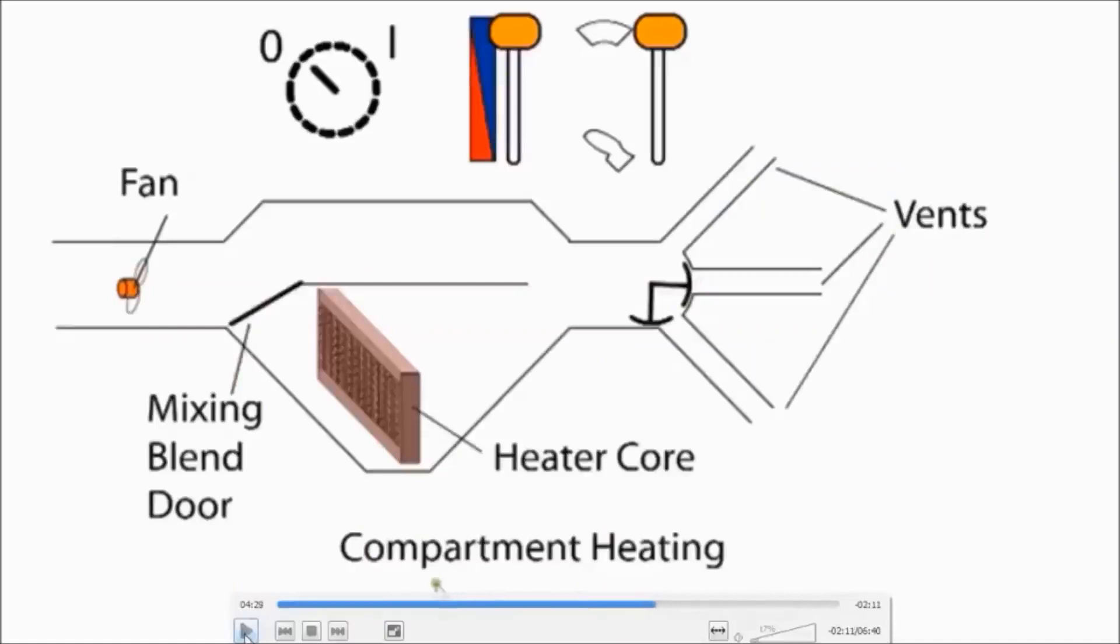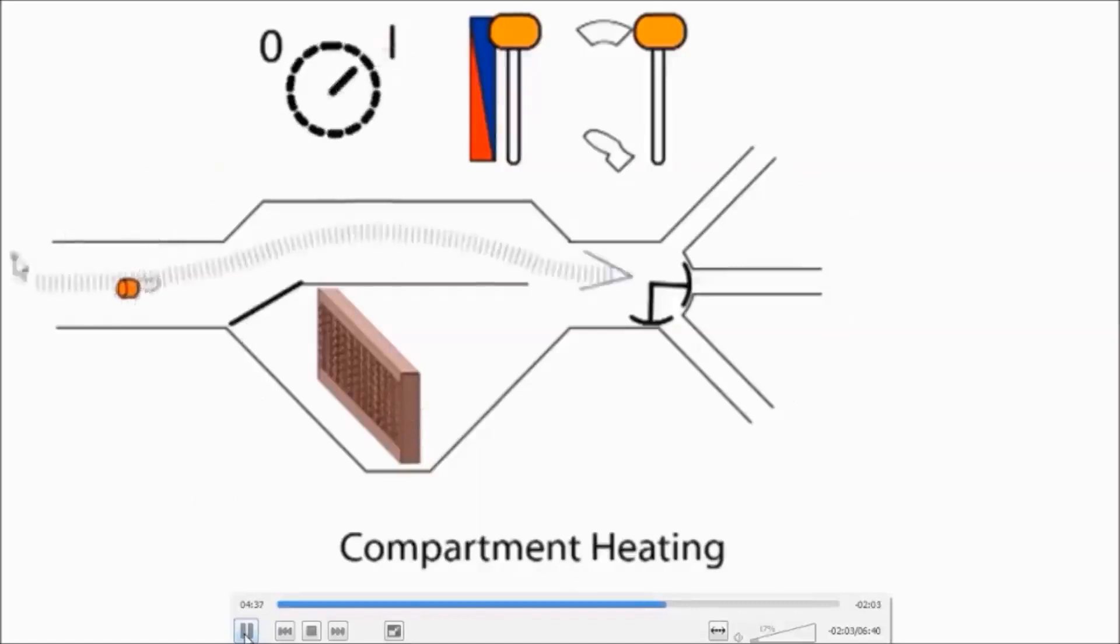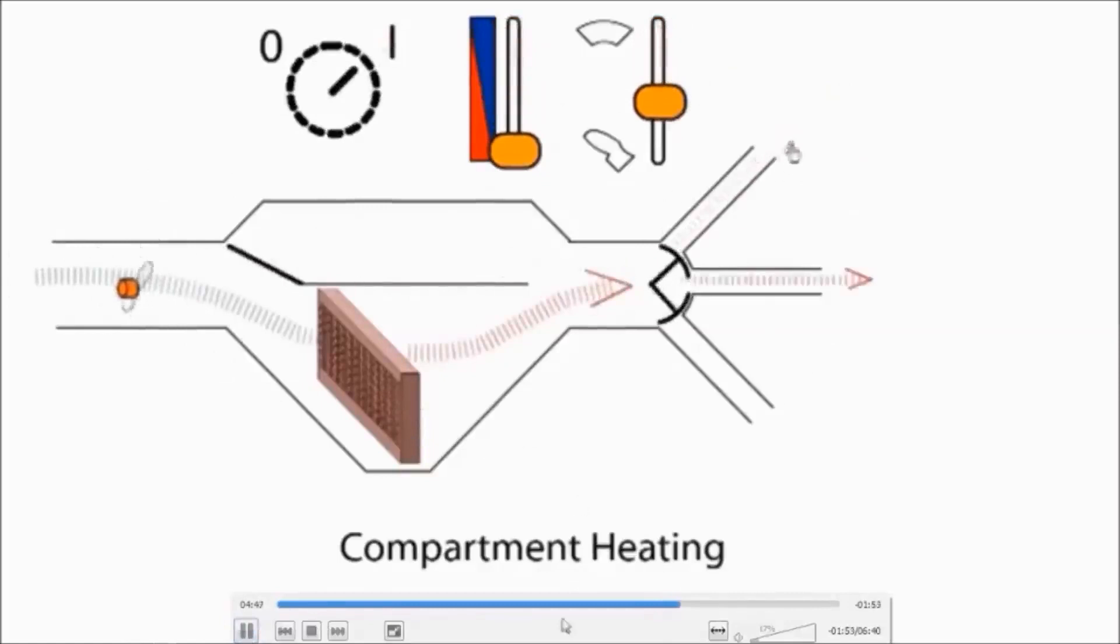Now we will understand what compartment heating is. For the interior heating system, coolant flows towards heater core located near the dashboard of the car. An electric fan assists the movement of the air. That air flows on the heater core and is directed towards windscreen area, passenger area, and towards the floor area as required.